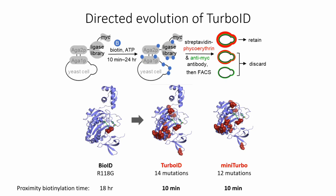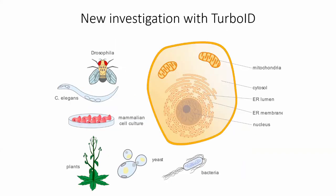In contrast to BioID, which requires an 18-hour labeling time, both mini-turbo and TurboID require as little as 10 minutes of labeling — sometimes less — and they have higher labeling yields, which gives high-coverage proteomes while maintaining high specificity. These faster, more efficient enzymes have allowed proximity labeling to be extended to several new biological questions and model systems that were previously inaccessible to the technique.